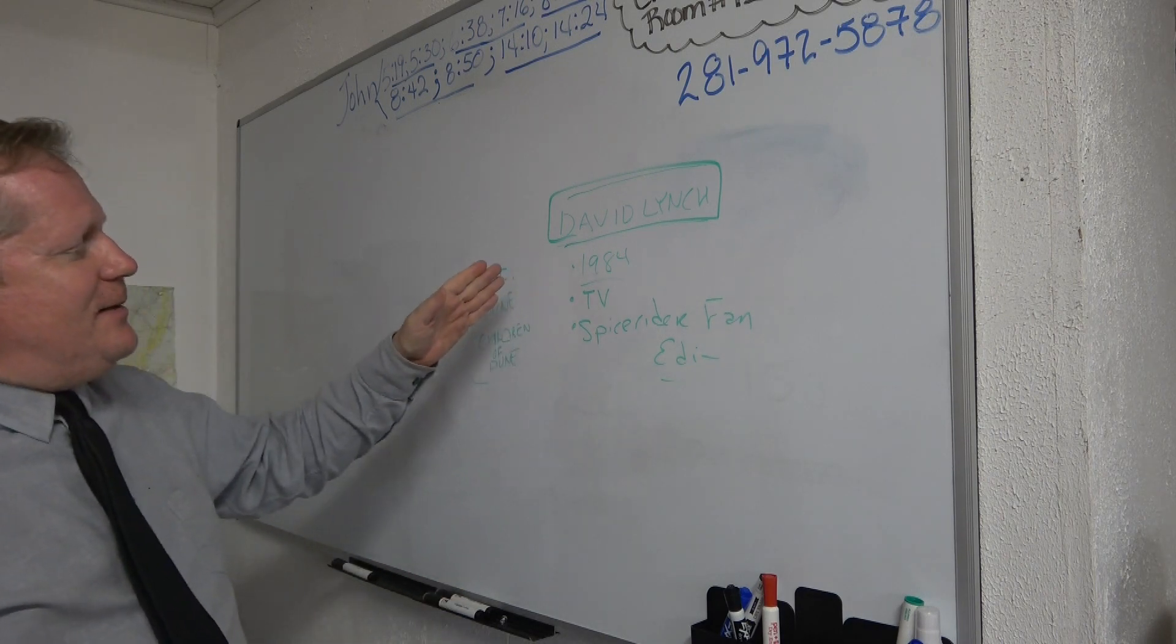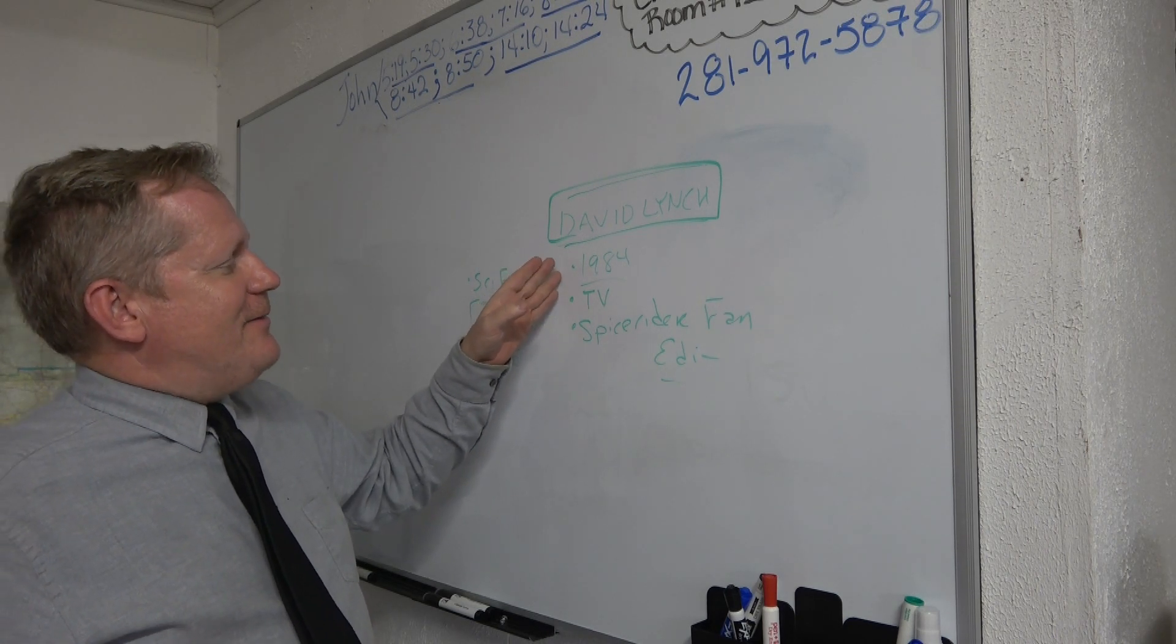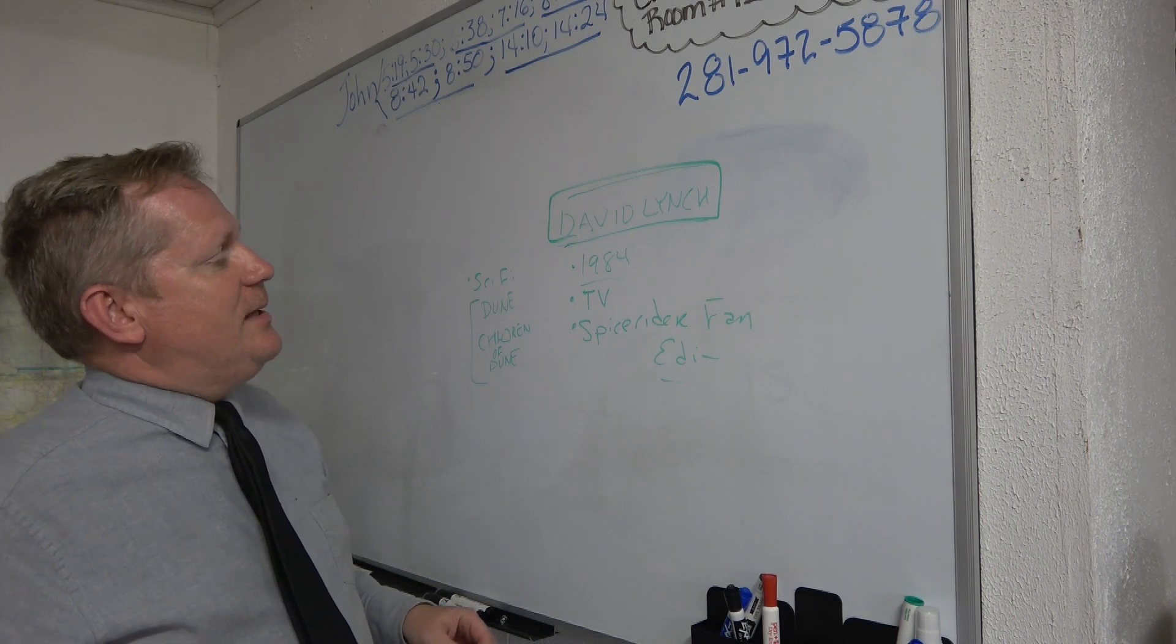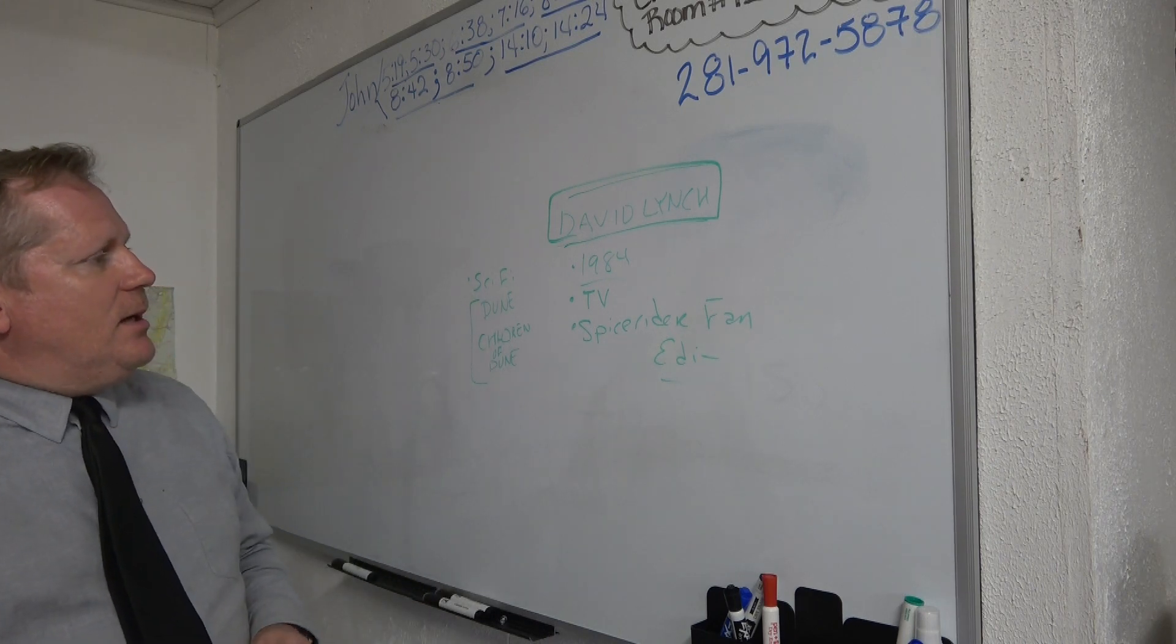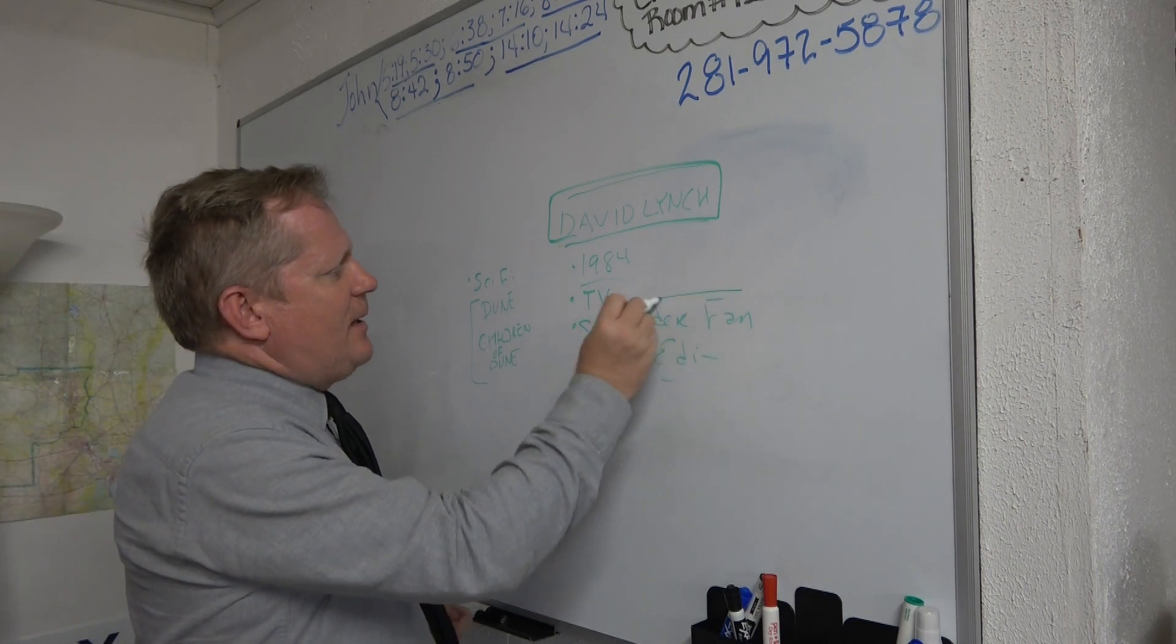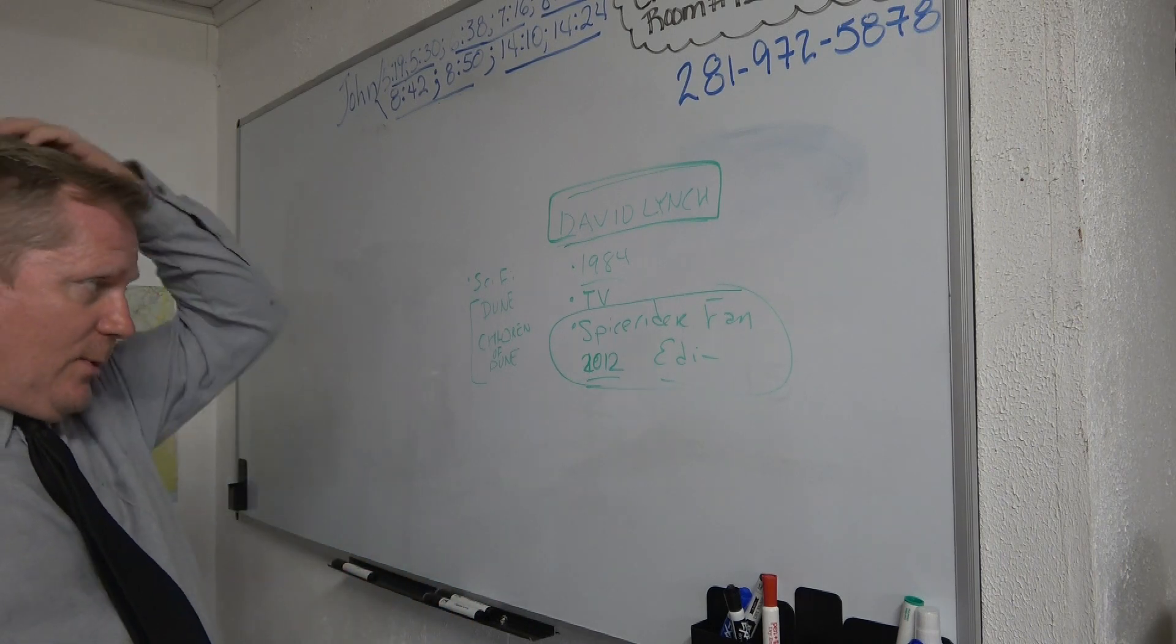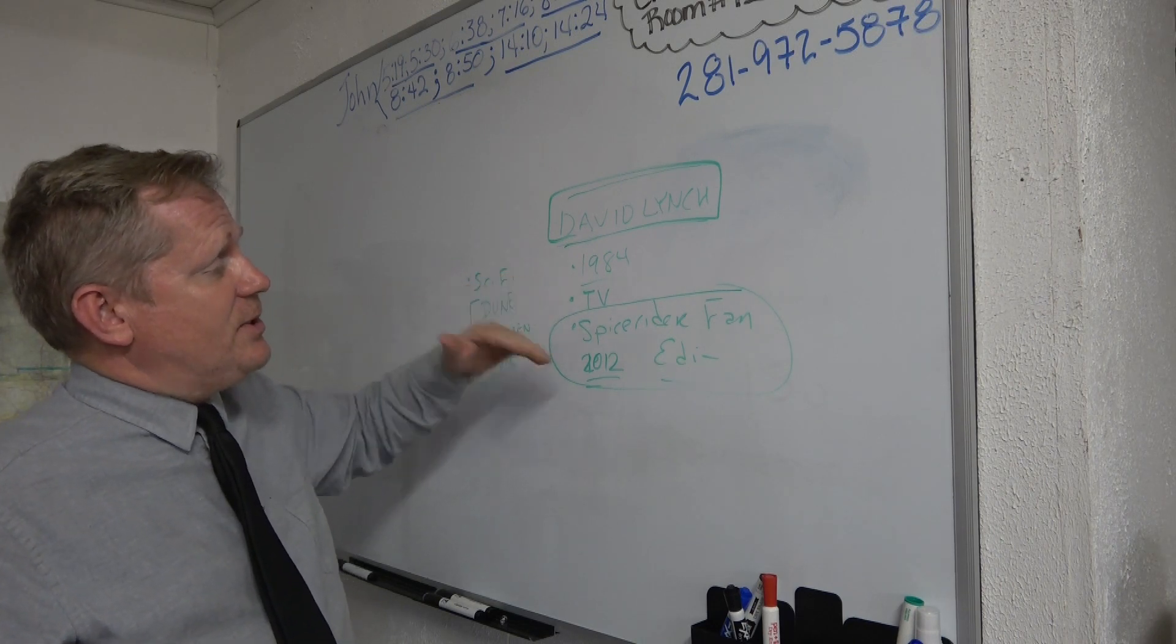All right, so back to David Lynch's Dune. He had a theatrical cut. Apparently he filmed like a four to five hour long movie, but they got it down to two hours and 17 minutes for the 1984 release. And the TV version added like 40 minutes. And then more additional footage was also released on a DVD. So we have the Spice Rider fan edit, and his last edition was from 2012. And what do I think? Well, the TV, there's certain things that belong in the movie.